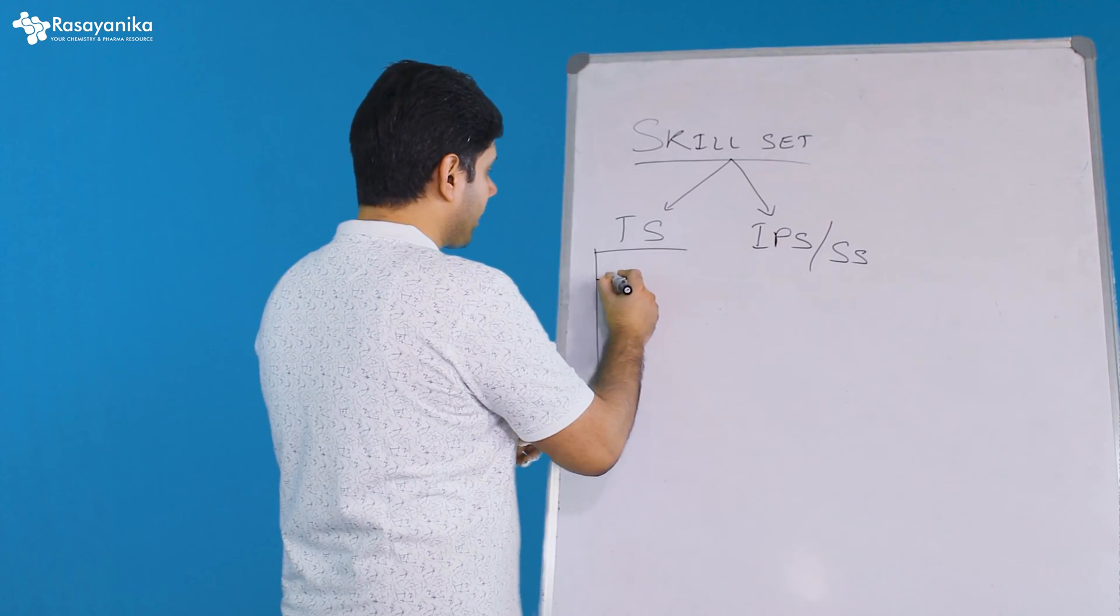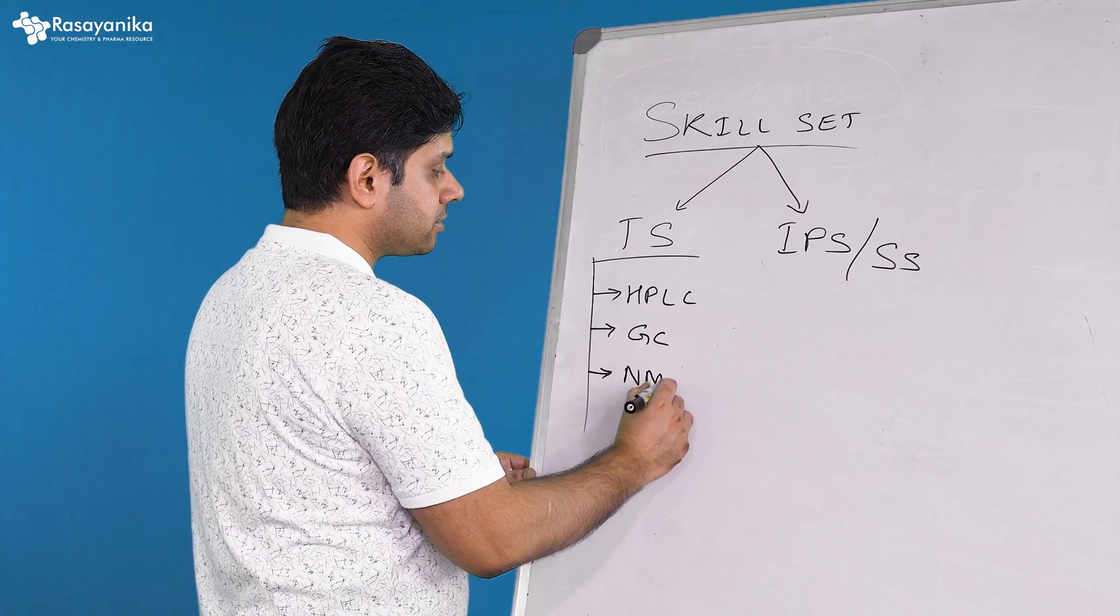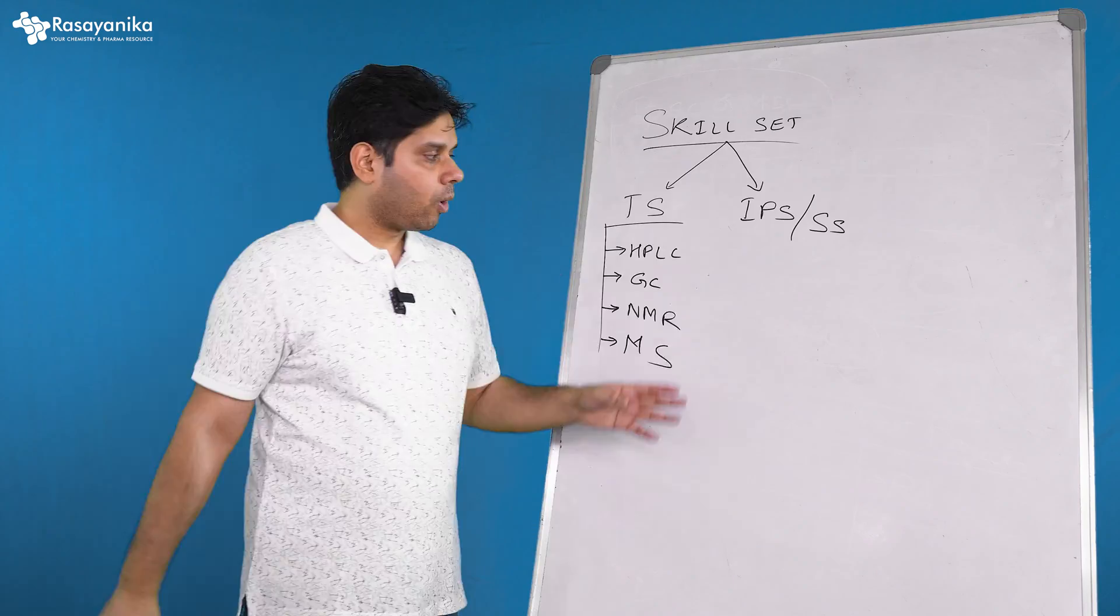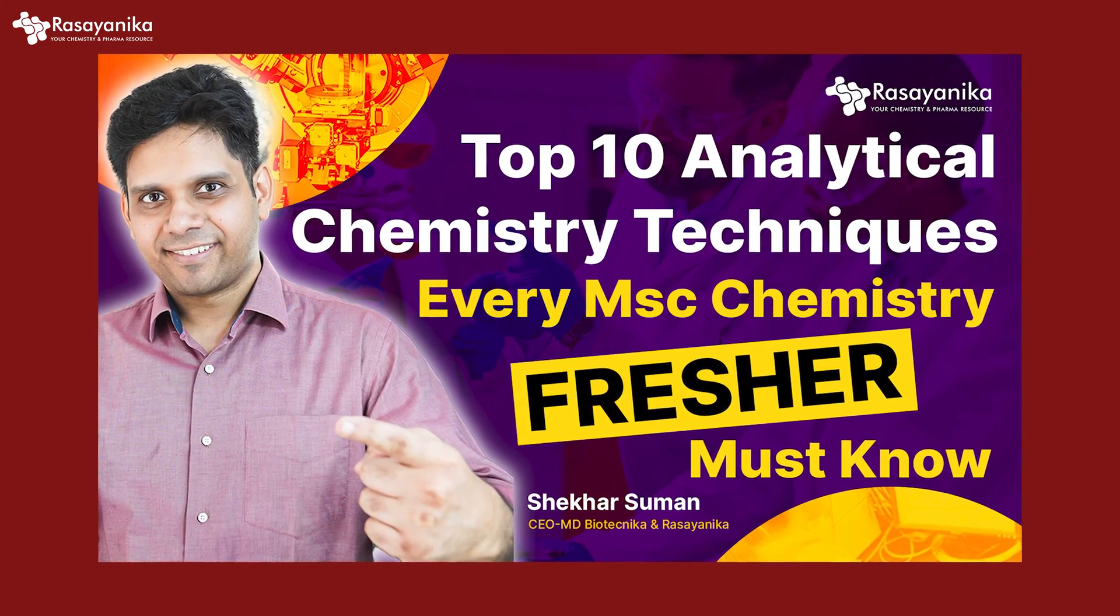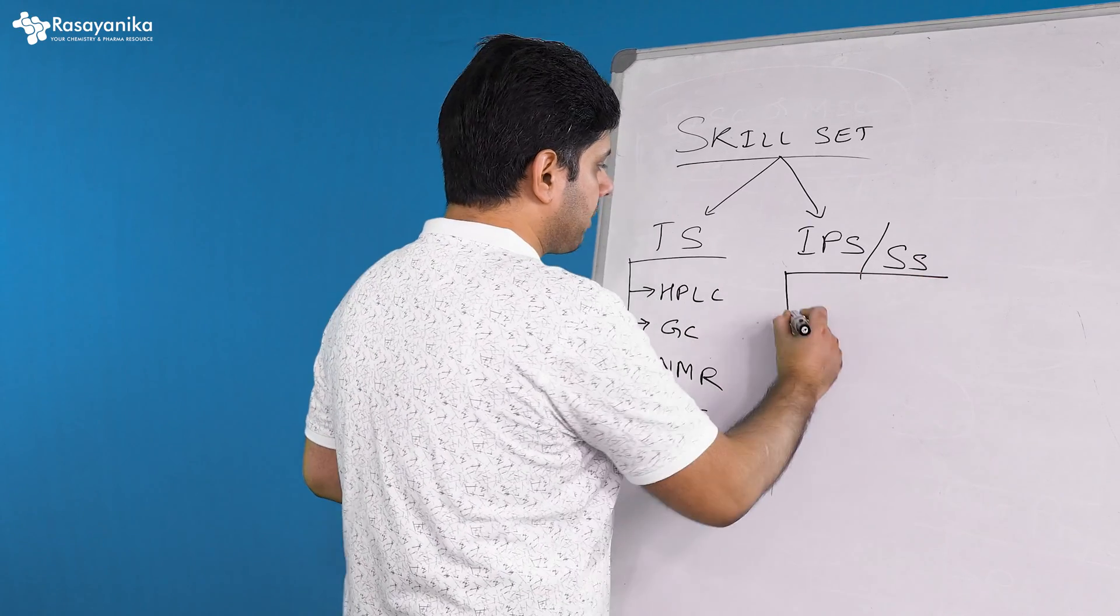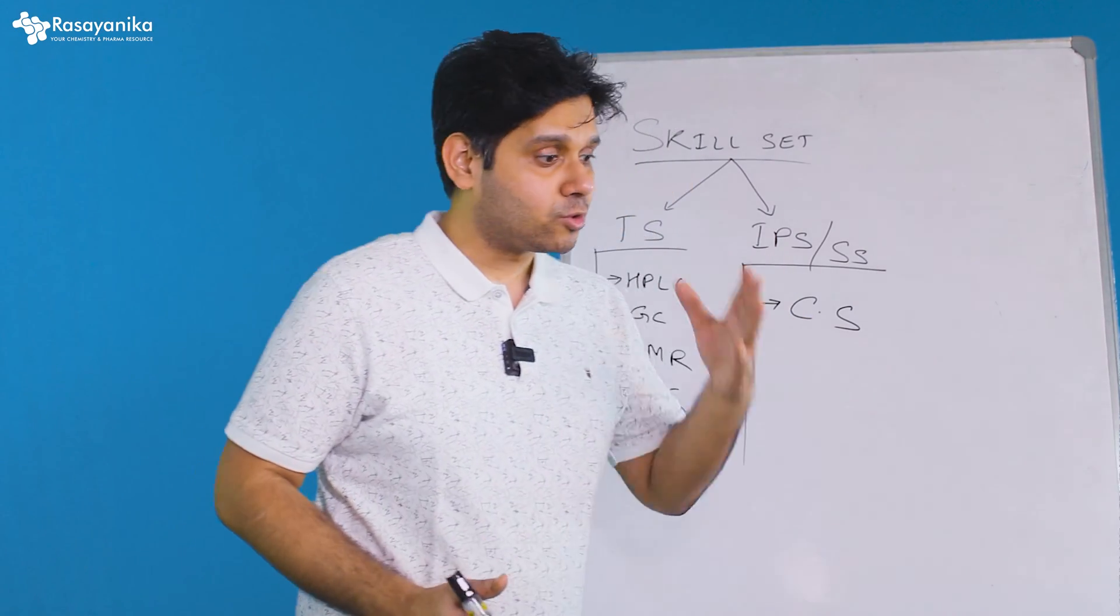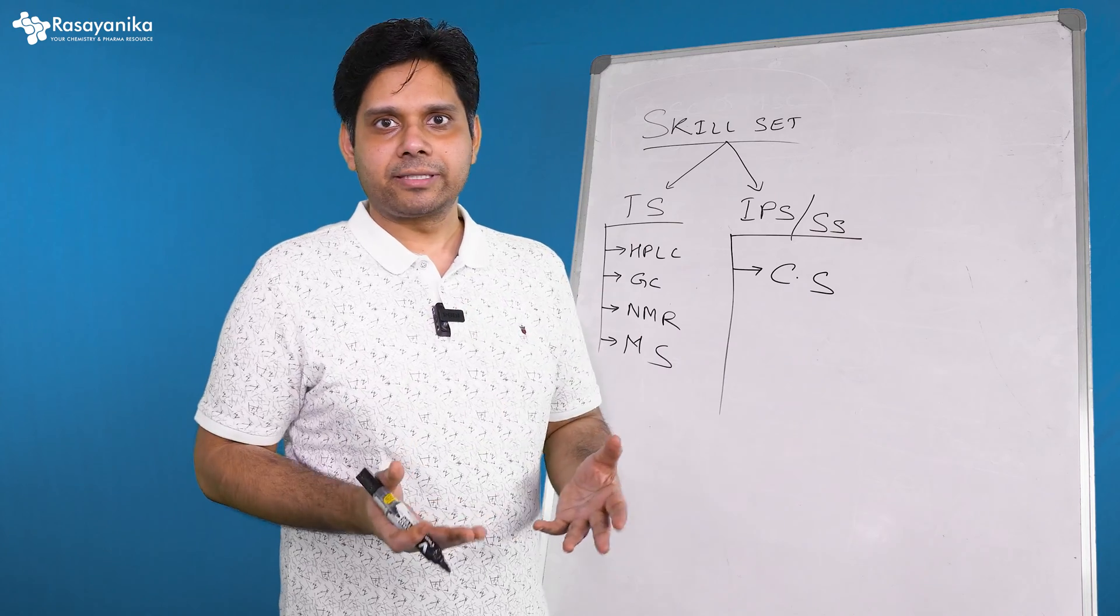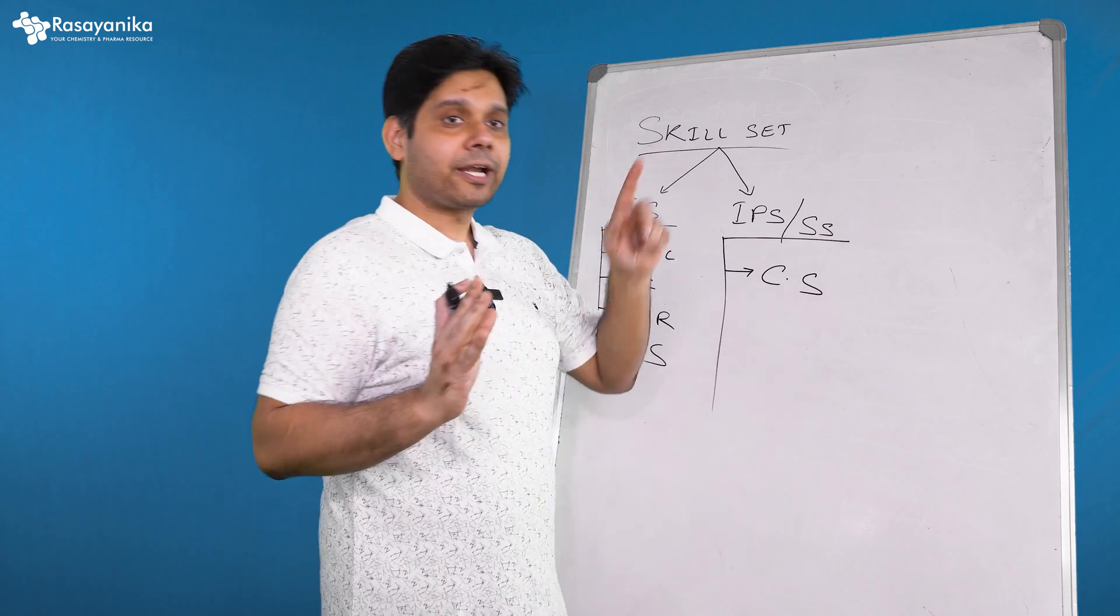Let's talk about the technical skill set first. The technical skill set which you need to gain while you are still a fresher will be HPLC, GC, NMR, and various other techniques are there. Mass spectrophotometry, mass spectroscopy, all this you have to learn. Now, these are analytical chemistry techniques. I have already made a separate video of 10 analytical chemistry techniques which you should have and that video is on Rasanika YouTube channel. Coming to the soft skills. The first will be communication skills. How strongly you can communicate, how nicely you can communicate. You use the right words at the right time.